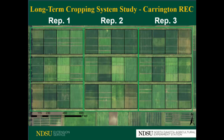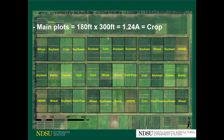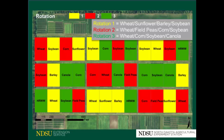Here we can see on this picture the three replications and all the main plots in each replication. The main plots are the different crops and the crop rotations. For each crop rotation — for example, rotation one — each phase of this rotation is planted every single year. So rotation one can have wheat, sunflower, barley, and soybean, and all those phases are present every single year.